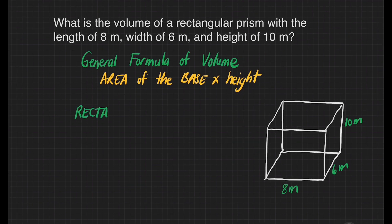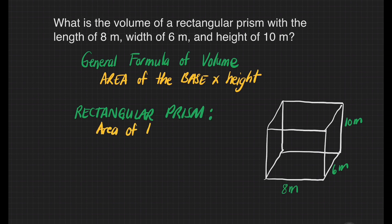Based on our given, we have a rectangular prism, and we can simply apply the general formula, which is area of the base times height. If we take a look at the base of our given, that is in the shape of a rectangle.